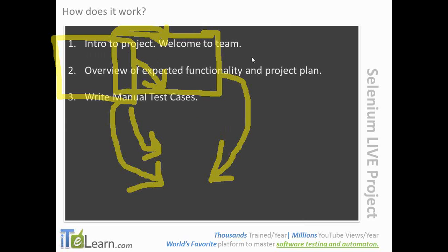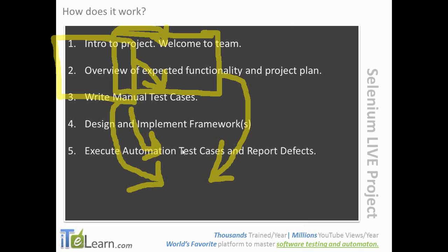We'll start with the intro to the project, then get an understanding of the detailed functionality. You'll start with writing manual test cases so you know what you're going to be automating. You'll then design and implement one or more automation frameworks using Selenium with Core Java, in combination with JUnit and WebDriver. Finally, you'll execute the test cases and report the defects. There is a limited scope, but a lot of things to perform accordingly.